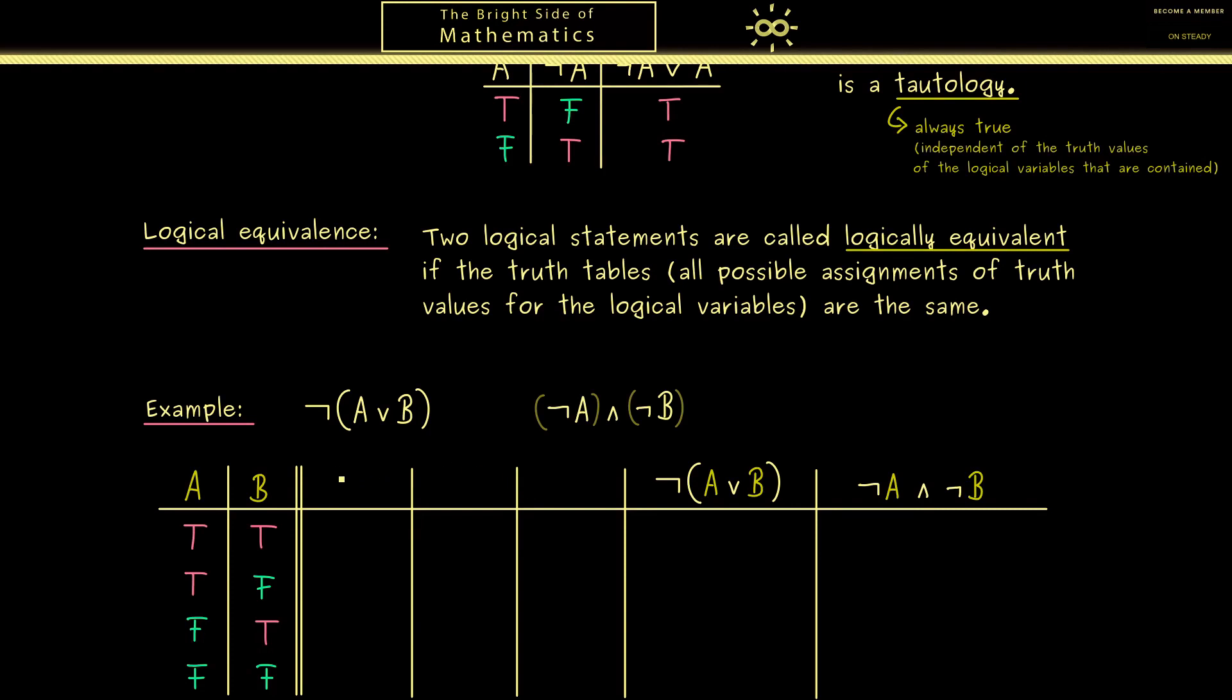Afterwards, we have to think what are good intermediate steps to reach our result on the right-hand side. Here, for example, I would say we calculate first A or B. For this, we already know the truth table: we have true, true, true, false. Then we just have to use the negation, which switches all the truth values, so we have false, false, false, true.